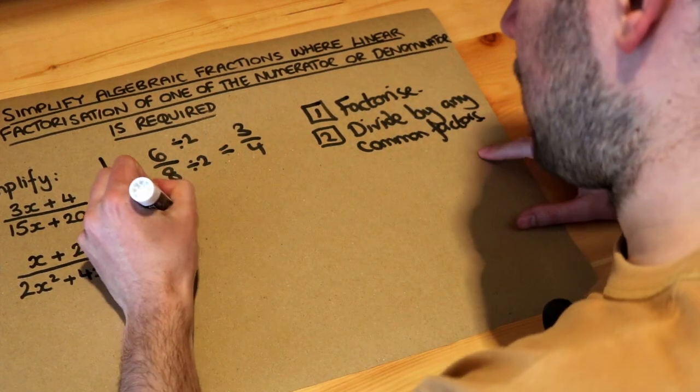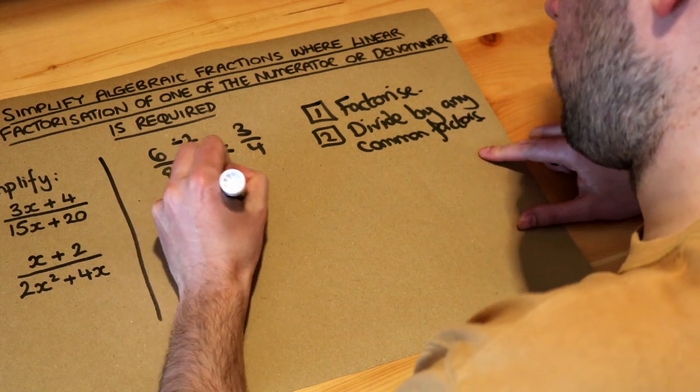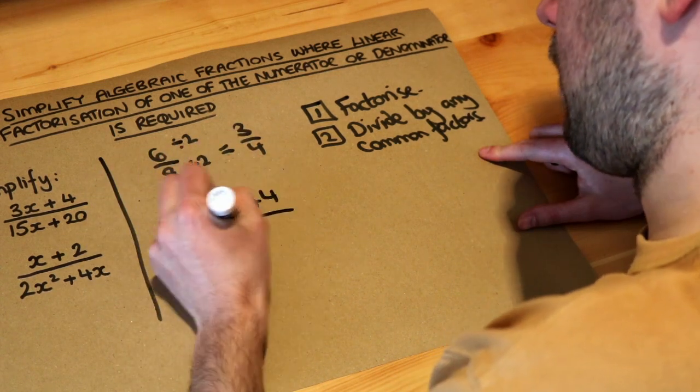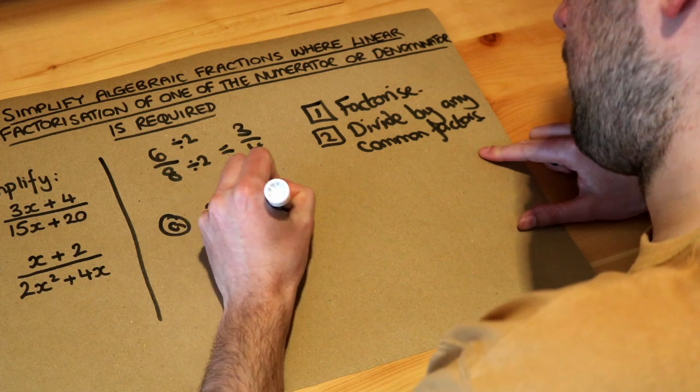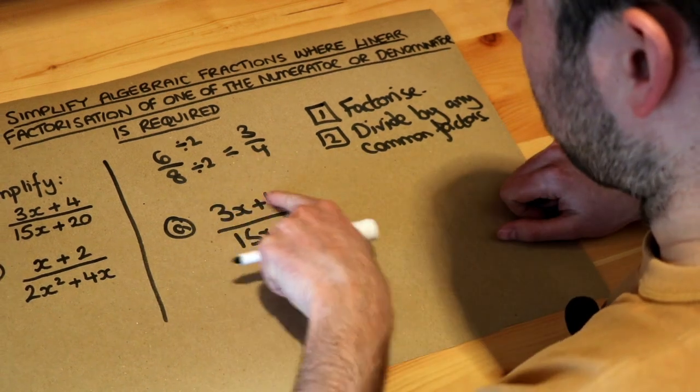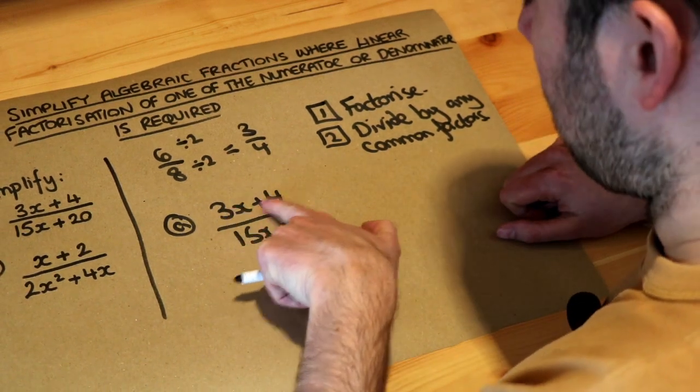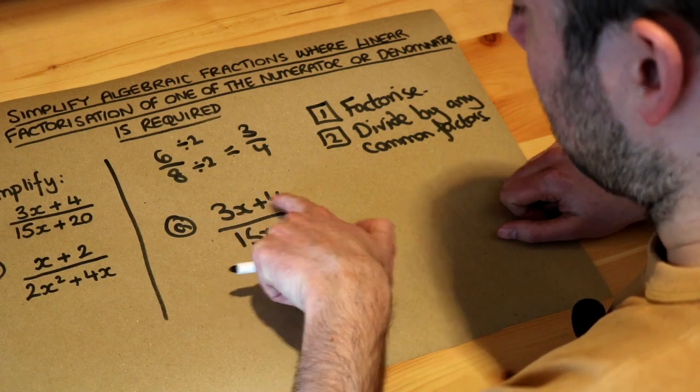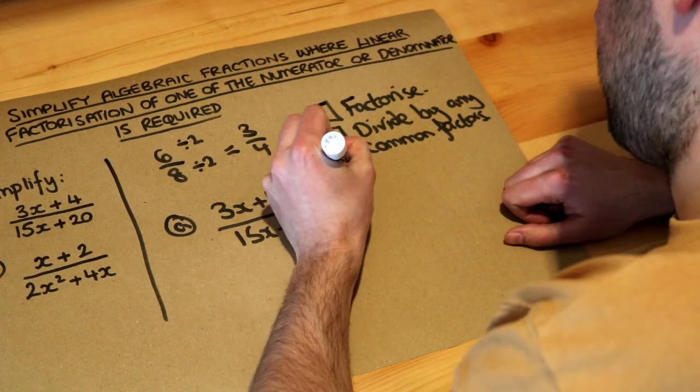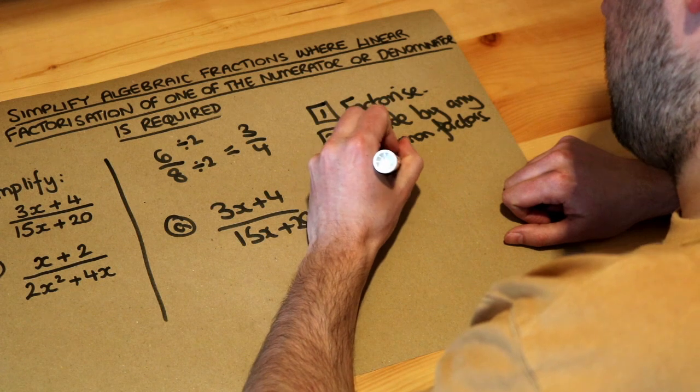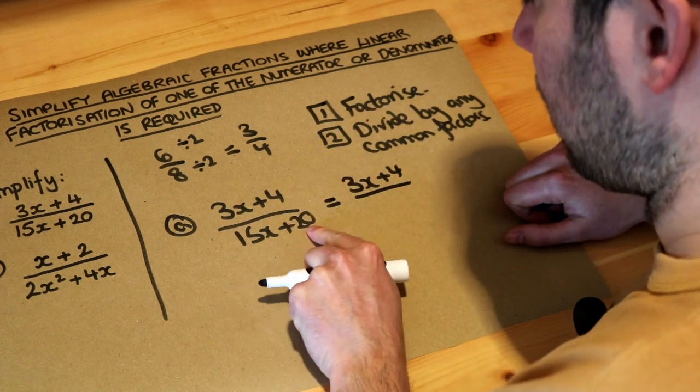So if we take the first one, we've got 3x plus 4 over 15x plus 20. So firstly, we factorize the top and the bottom. So can we factorize this? Is there anything common to 3x and 4? No, there isn't, so that's just going to stay the same. But is there anything common to 15x and 20? Yes.